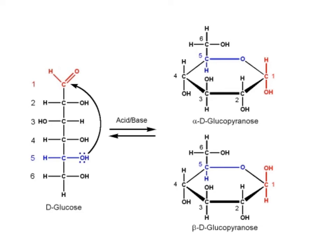Hi class. What we're going to look at now is the cyclization of these sugars. Over here on the left we have D-glucose, and this is how you've seen it in the straight chain form, in the Fischer projection where the most oxidized carbon is on the top — our aldehyde — making this an aldose, going straight down with six carbons. I want to highlight these six carbons because it's going to be really important for housekeeping later when we look at the cyclization.